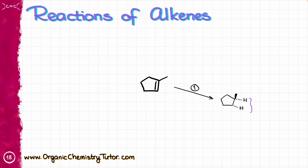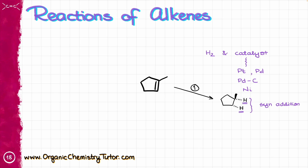In my first reaction, I'm adding two hydrogens to the carbons of my alkene, and those two hydrogens are added from the same face of the molecule — that is what we are going to refer to as a syn addition. The reaction that gives the syn addition of hydrogens to a double bond is going to be hydrogenation. Our reagents are going to be hydrogen and some sort of a catalyst. When it comes to our catalyst, we have quite a few different options: we can do platinum, palladium, palladium on carbon, or nickel. These are going to be the most common ones you are most likely to see in your course.